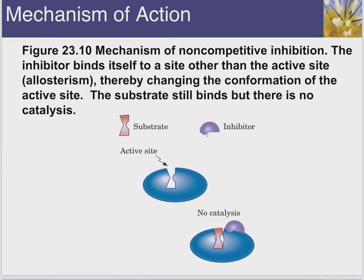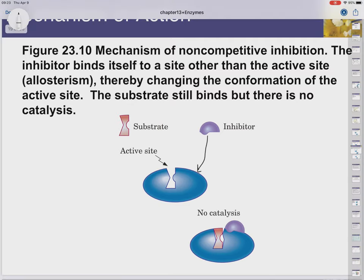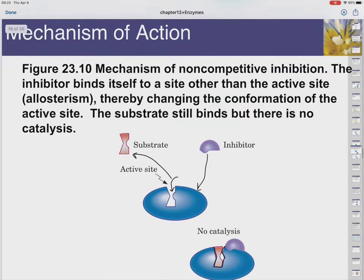In allosteric inhibition, allosteric meaning the other site, not every enzyme is susceptible to this kind of inhibition — if they are, they're called allosteric enzymes. There's just another site somewhere on the enzyme that the inhibitor binds to. By doing that, it changes the shape of the active site. You can see that this active site matches the substrate, but after inhibition, the active site changes and now it's got a slightly different form — so it's not going to exactly match up with the substrate and it won't work anymore.